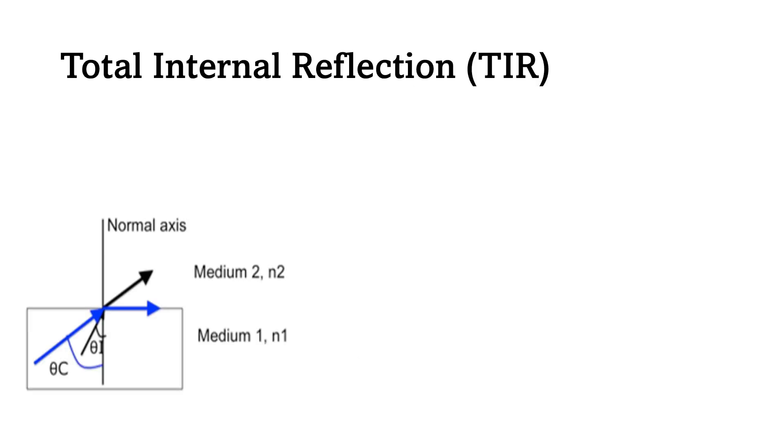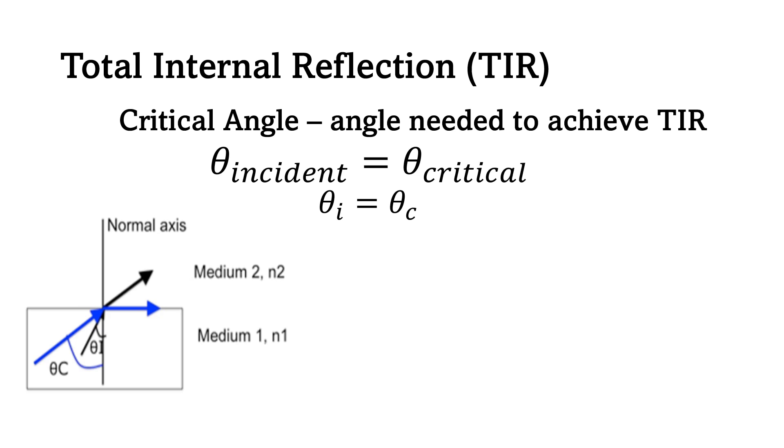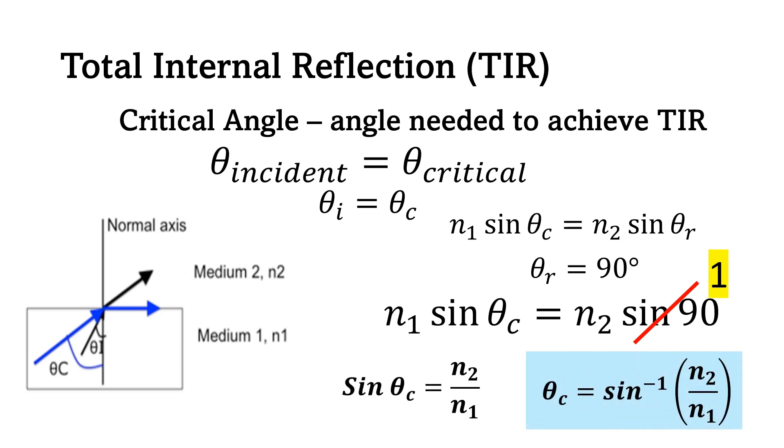To achieve total internal reflection, incident ray must not enter to the second medium, and critical angle must be determined. The critical angle is the incident angle that will give us the maximum refractive angle which is 90 degrees, and sine of 90 is equal to 1. Therefore, the critical angle is simplified as the inverse sine of N2 over N1.